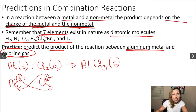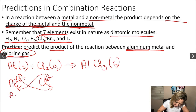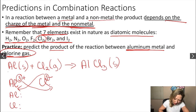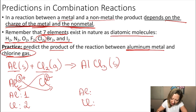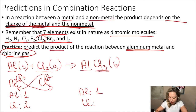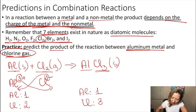We can also balance the equation. Let's look at the number of atoms on each side. On the reactant side: one aluminum atom and two chlorine atoms. On the product side: one aluminum atom and three chlorine atoms. To balance this, since we have an even-odd situation, we multiply the odd part by two — giving us two aluminum atoms and six chlorine atoms on the product side.